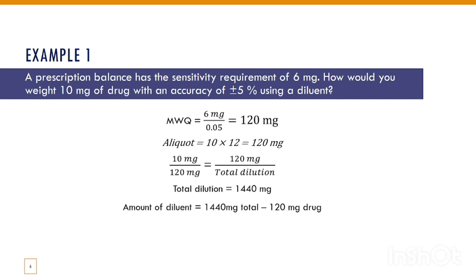The amount of diluent is calculated by subtracting the minimum weighable quantity from the total dilution: 1440 mg minus 120 mg equals 1320 mg. By mixing the drug and the diluent, we have our dilution of 1440 mg. We then separate 120 mg aliquot from the total dilution of 1440 mg — in that 120 mg aliquot, we have 110 mg diluent and 10 mg drug. This way we can measure our 10 mg drug using the aliquot.